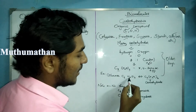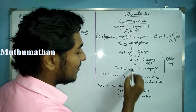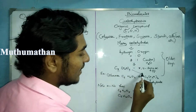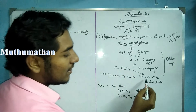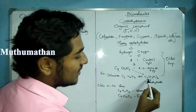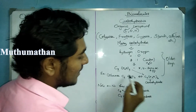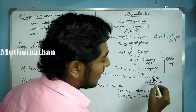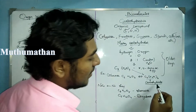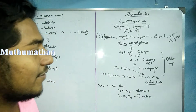We have a lot of oxygen in this formula. Carbon is 6 and water molecules are 6. So the general molecular formula for a simple carbohydrate like glucose is C6H12O6.